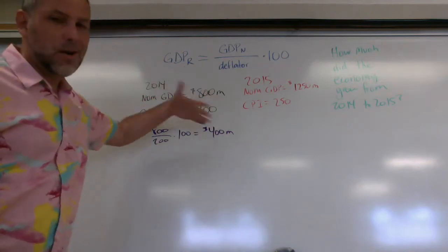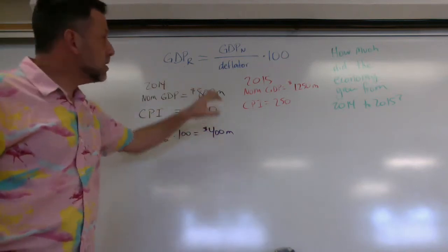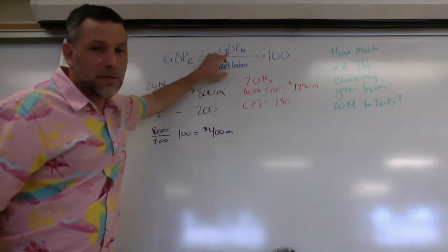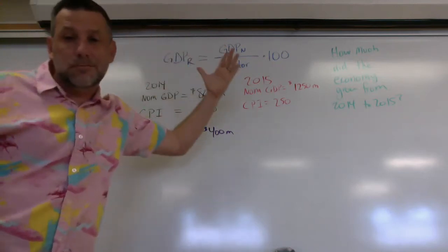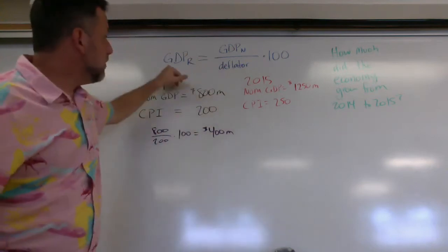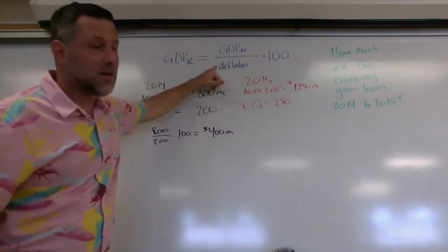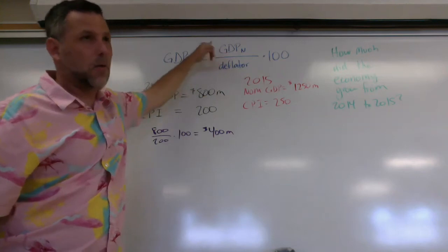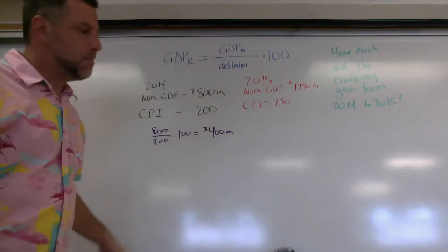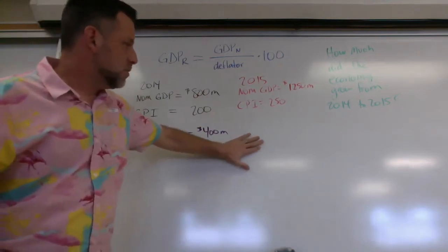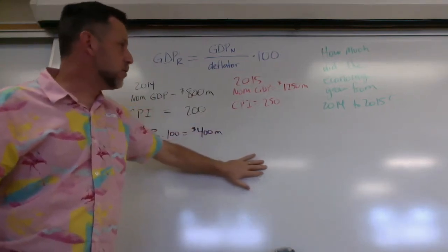So I use this equation here. Now in the real world, you're finding nominal, you're finding deflator, you're using that to get the real. In the college board world, they could give you the real and they could give you the deflator, and then you could solve for X up here, or they could give you real and nominal, and then you find the index number. But let's move on, we're going to find real GDP for 2015.